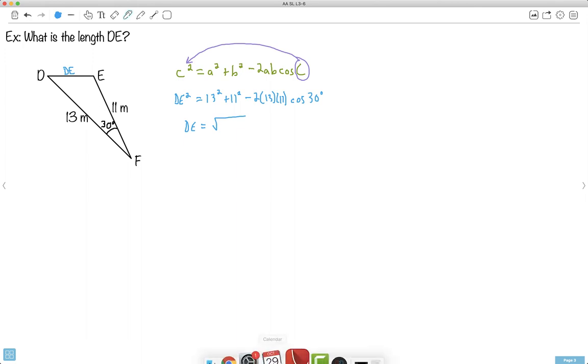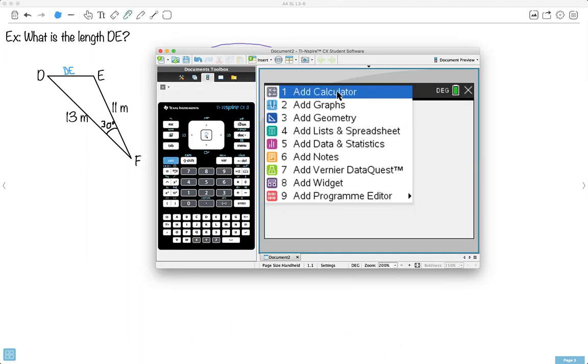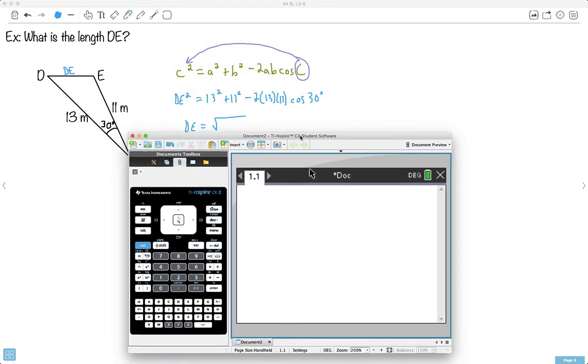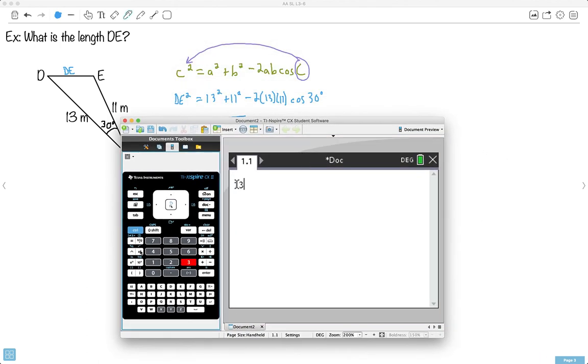To do this, I think it's just going to help to have a calculator. So let me open that up. Make sure I'm in degree mode. And away I go. Let's just try to do this. I can do it all at once. I can say 13 squared plus 11 squared. Those we can do by hand, but then it gets a bit complicated with these numbers. So minus, I'll put in brackets. I'll say 2 times 13 times 11 times the cosine of 30 degrees. So this here looks pretty good. Let's say enter.